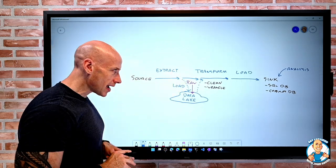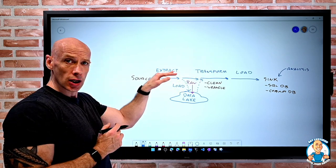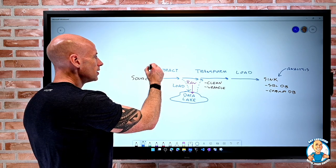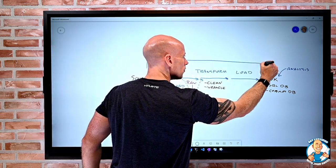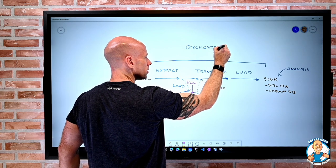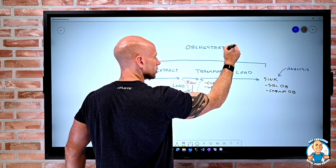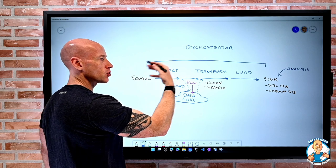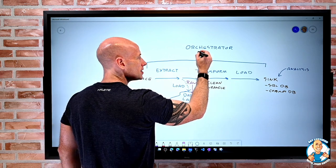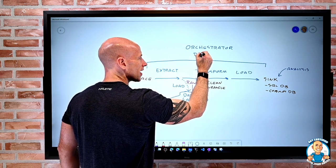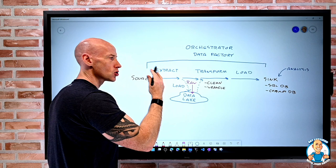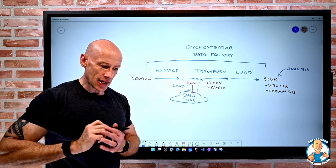So if I think about that entire thing, there's a certain orchestration that has to happen for that. So if I think of Azure services, there's this idea of an orchestration. Something has to happen to do that, to connect to the system, to extract it, to call something to do the transform, put it in a data lake, load it. And so this is Azure Data Factory.